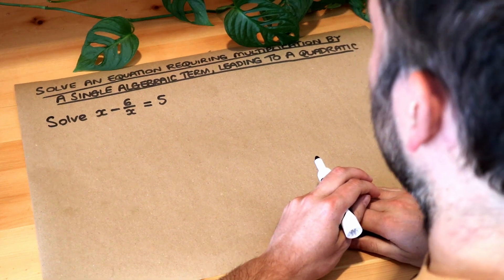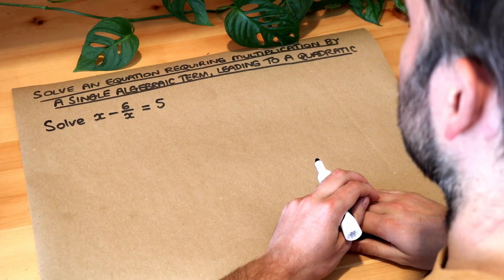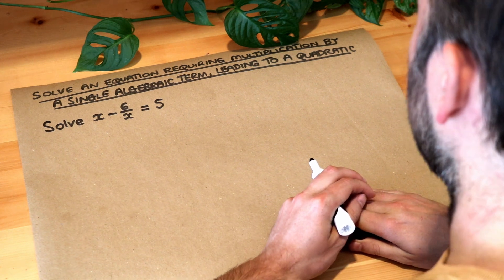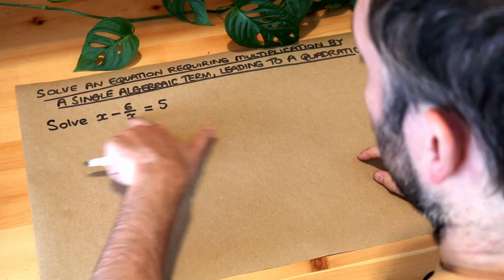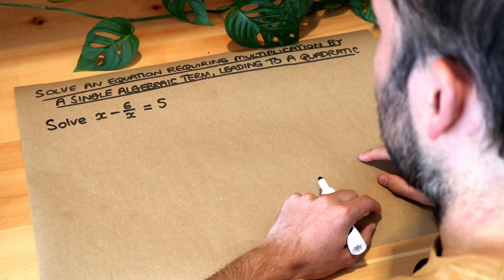Hello and welcome to this Dr Ross video on solving an equation requiring multiplication by a single algebraic term leading to a quadratic. We've got this equation here we want to solve, to find the possible values of x.